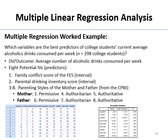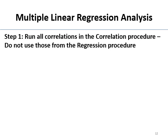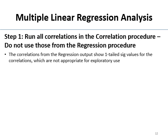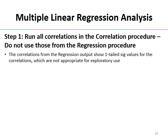Here are our means. We need to run a big correlation matrix first. Importantly, you cannot use the correlations that come out as part of the regression procedure — you have to run it in the correlate bivariate procedure. The correlations from the regression procedure are one-tailed correlations, and we don't really have one-tailed hypotheses here. We want to know which things predict — that's a two-tailed hypothesis. So you cannot use the ones that come out of regression.